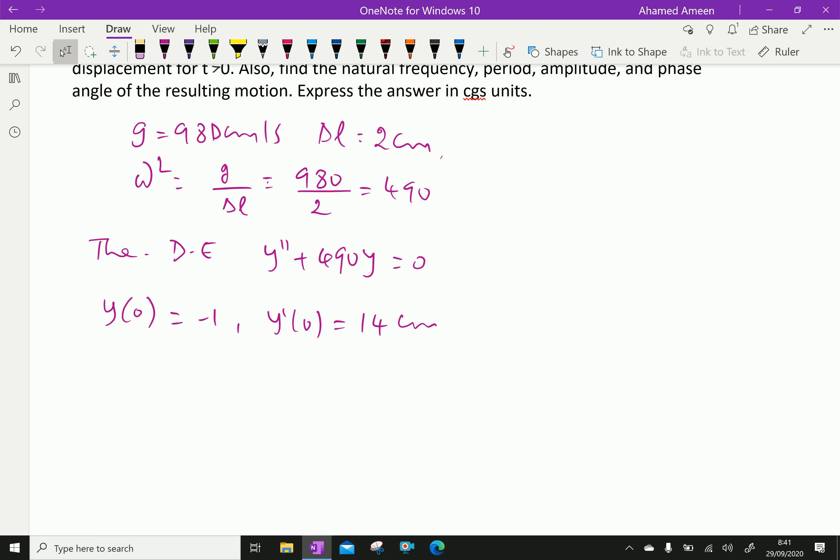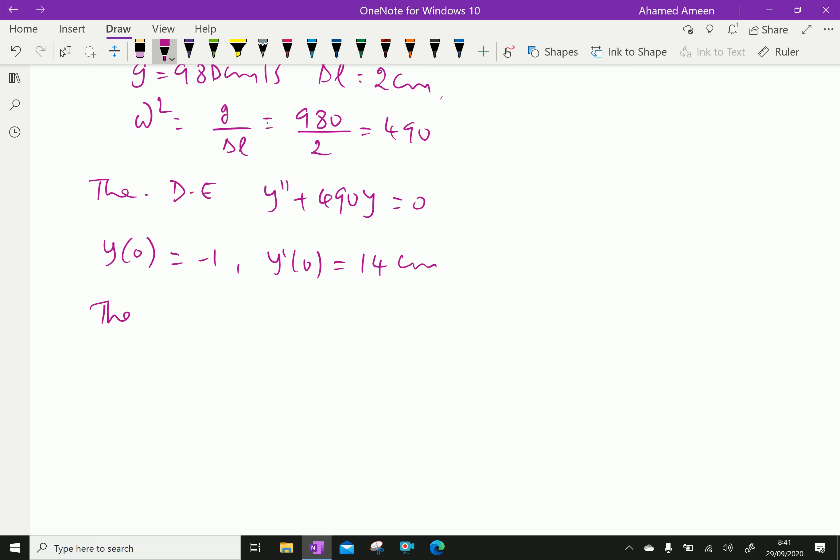Now the general solution of the differential equation is y equals C1 cos 7 root 10 t plus C2 sin 7 root 10 t. Here the root of 490 is 7 root 10.